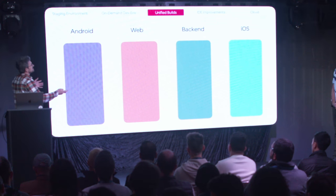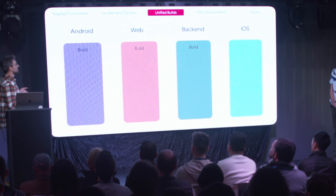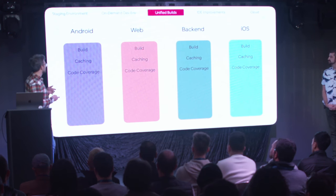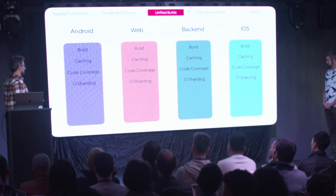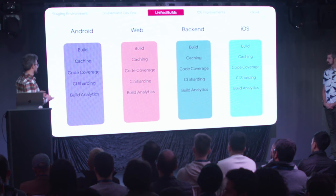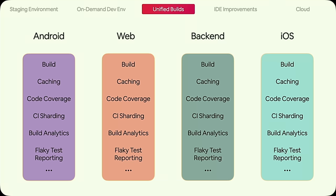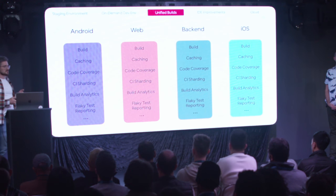These different platform repositories ask pretty much the same questions over and over: how to speed up builds, how to do caching, how to do code coverage, how to shard across machines in CI, how to build analytics, how to report and disable flaky tests. We asked ourselves: what if there was a way to solve all of those together once and share the results across all of them?